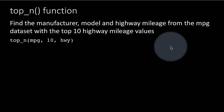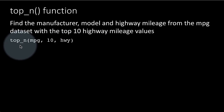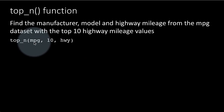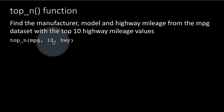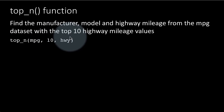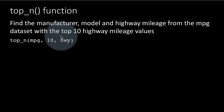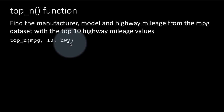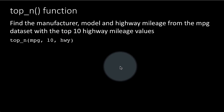Without using pipes, I'm just saying top_n, MPG as the name of the table or data frame, 10 as the value for n, and HWY as the column of interest. So we want the rows for which the highway mileage is in the top 10 of the highway mileage values.